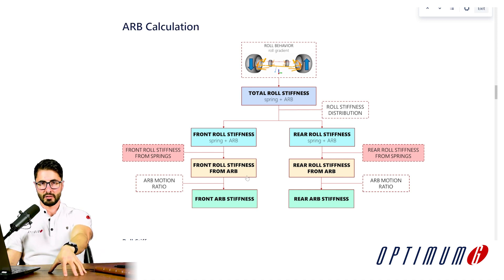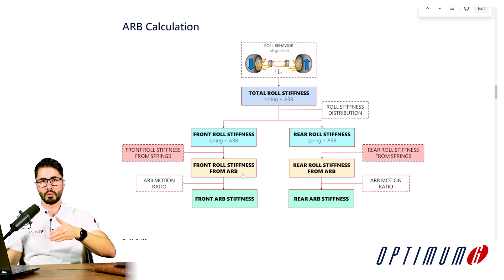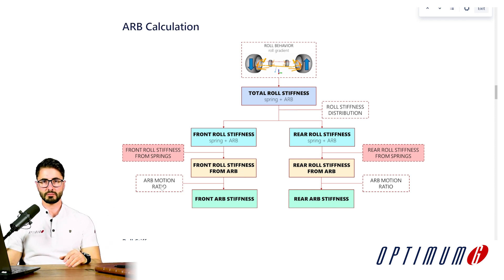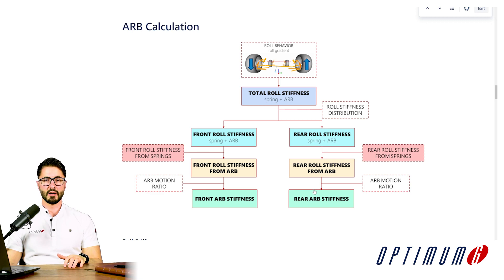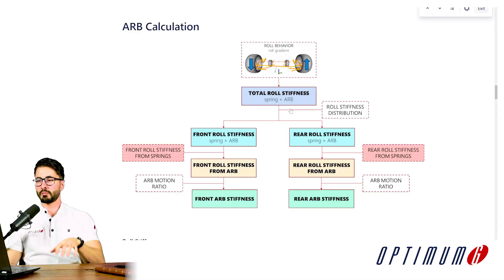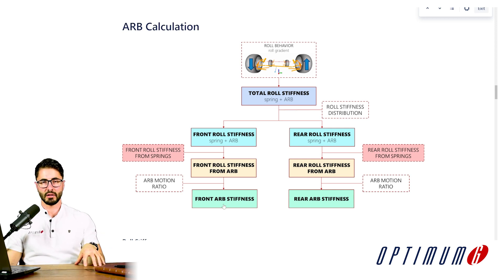We can calculate how much roll stiffness is coming from the springs. If we know the total roll stiffness and we know how much is coming from the springs, the only component missing is how much is coming from the anti-roll bar. So if we do total roll stiffness minus roll stiffness from springs, the only thing left is roll stiffness from the anti-roll bars — and we have the front roll stiffness from the anti-roll bar. This is at the car level; now we need to convert it to the component level using the anti-roll bar motion ratio.